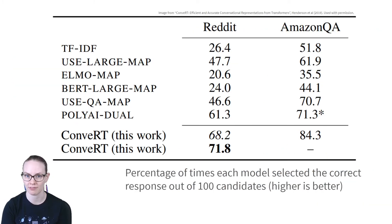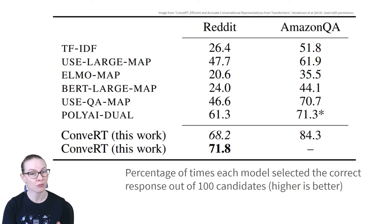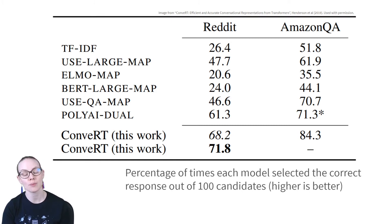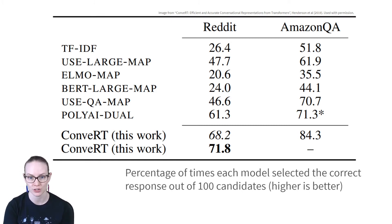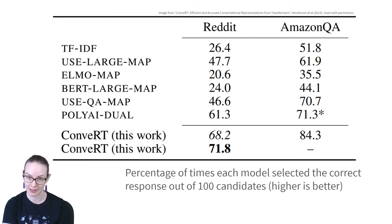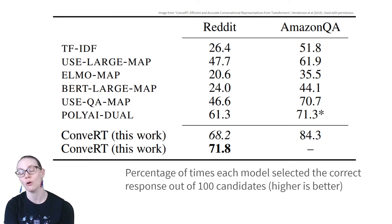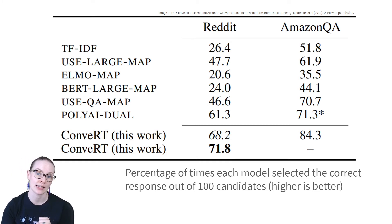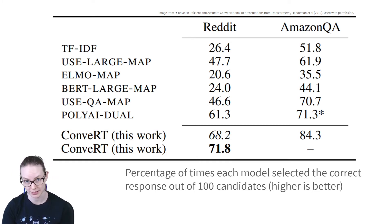In addition to being small and fast to train, ConveRT also has the additional benefit of performing really well. Compared to other models, including BERT, Universal Sentence Encodings, ELMo, and an earlier model by the same research team, PolyAI-DUAL, ConveRT was more likely to correctly select the correct response out of a hundred possible responses.